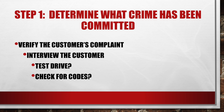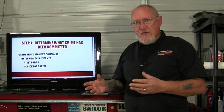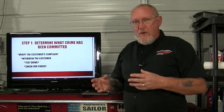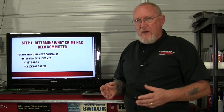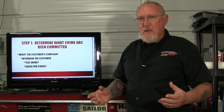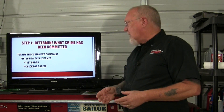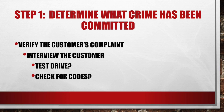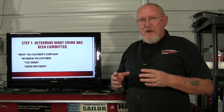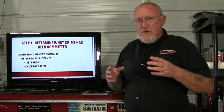First step: determine what crime has actually been committed. A lot of times people will see something happen and report different versions of what occurred. We don't really know exactly what type of problem we're looking to track down. So the very first thing we want to do is verify that customer's complaint. We want to spend time talking to the customer, or have our service advisor talk to the customer, and find out exactly what the concern is.